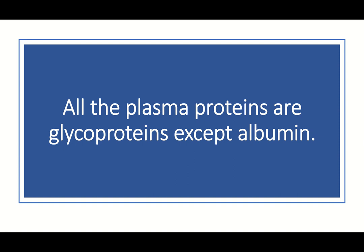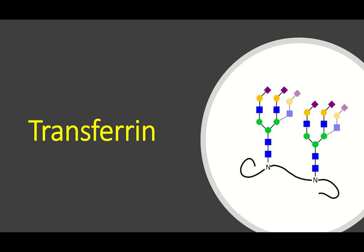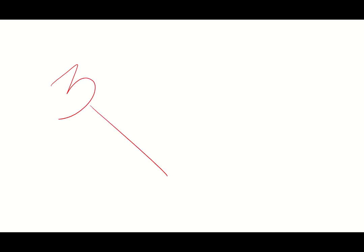First of all, I want you to know this fact: all the plasma proteins in humans are glycoproteins except albumin. Albumin does not contain any covalently linked oligosaccharide chain. Transferrin is a glycoprotein. There are three types of glycoproteins: N-linked, O-linked, and GPI-anchored glycoprotein.